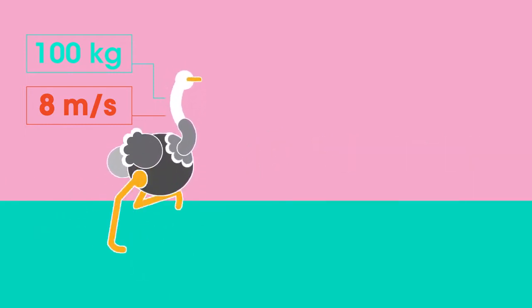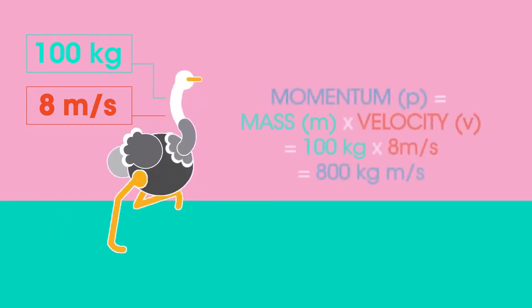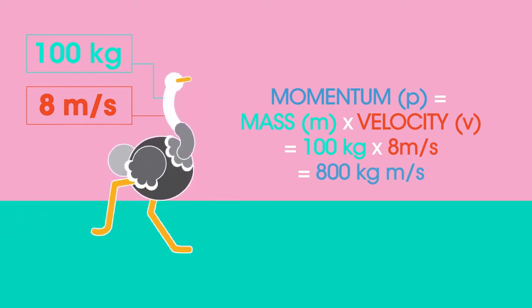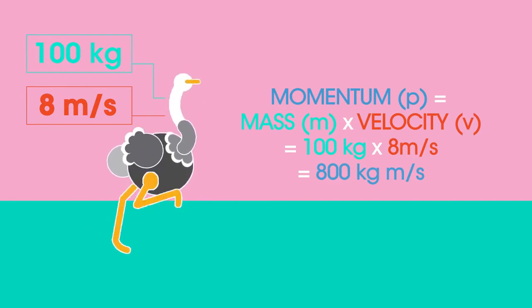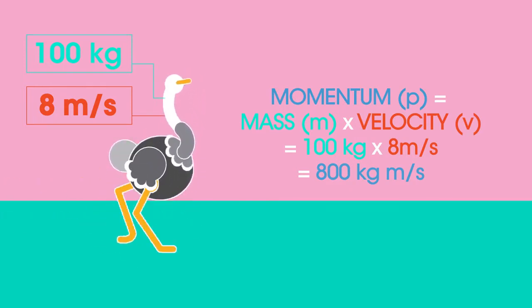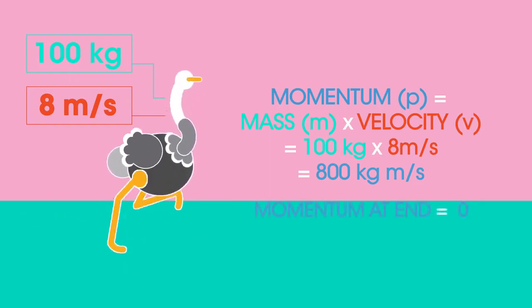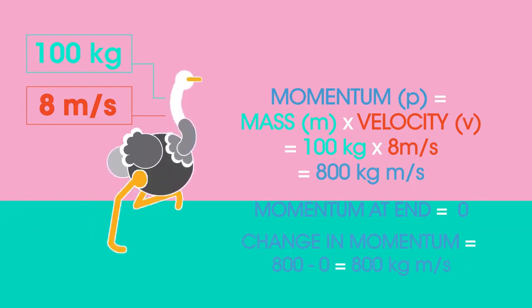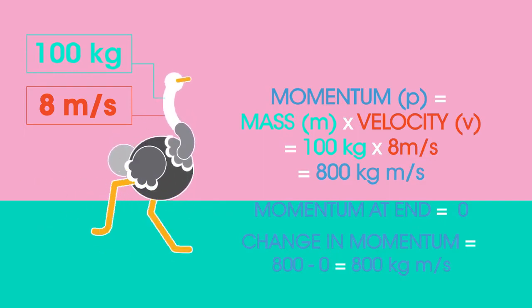First we need to calculate the change in momentum. Momentum at start equals mass m times velocity v which equals 100 kilograms times 8 meters per second which equals 800 kilogram meters per second. Momentum at end equals zero. Change in momentum equals 800 minus zero which equals 800 kilogram meters per second.